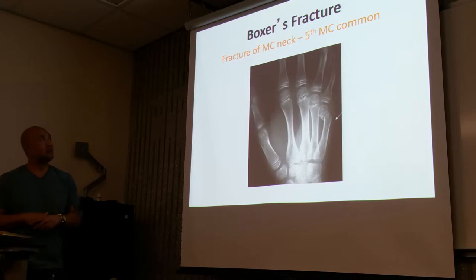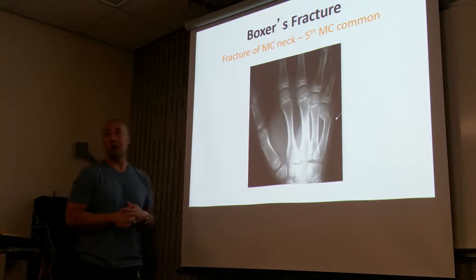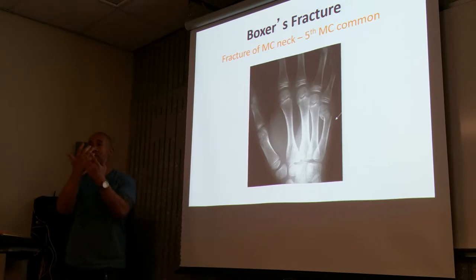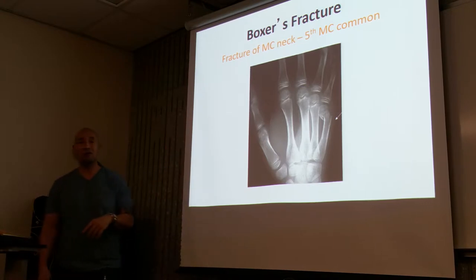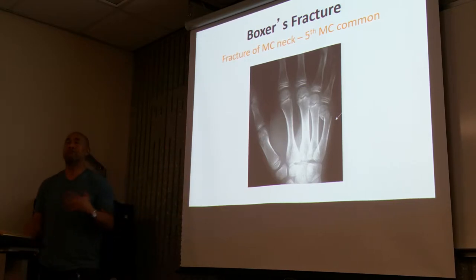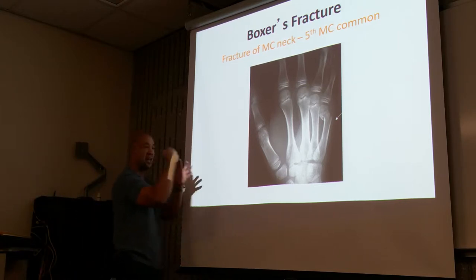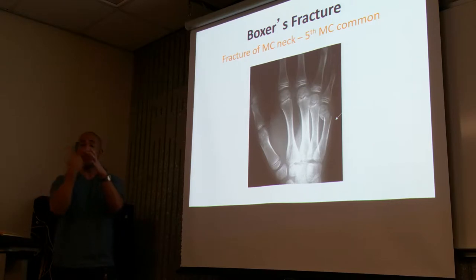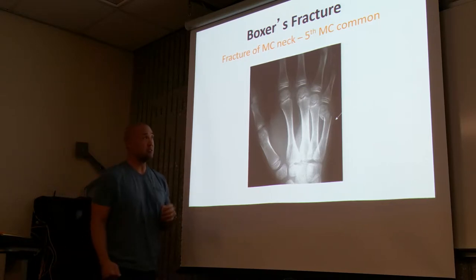Boxer's fracture — a fracture of the metacarpal neck of the fifth; the fifth is most common. You can have boxer's fractures in any part of the distal metacarpal, but most common on the fifth. They call it boxer's fracture because when you're punching, you're not punching straight on — you're punching at an angle, and it's the fifth area that receives the injury.